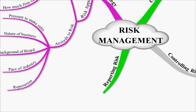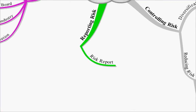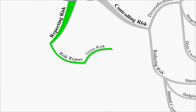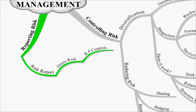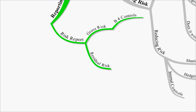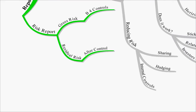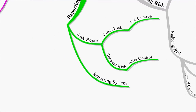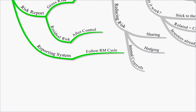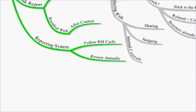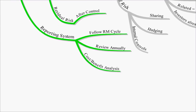On then to risk reporting. A risk report has a few aspects. Number one, you're going to report the gross risk, which is the risk before any controls are in place — if you just let the risk run, this is what it would be. The residual risk, however, is the risk once you've put a control in place — what's left once you have the control in place. The reporting system will follow the risk management cycle, will be reviewed annually, and must have a cost-benefit analysis — there's no point in putting risk management processes in place if it outweighs the cost of the risk in the first place.